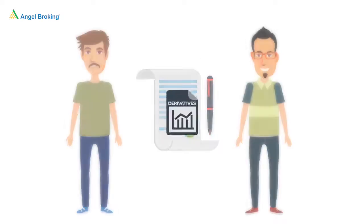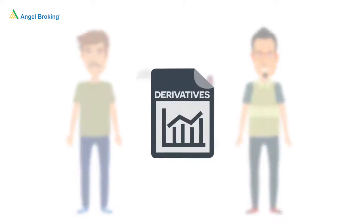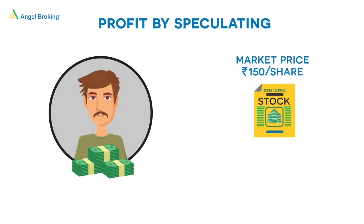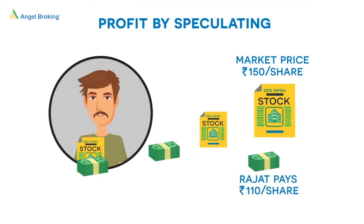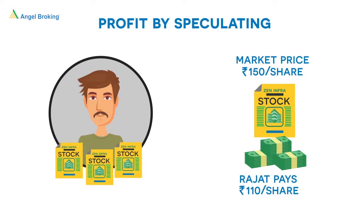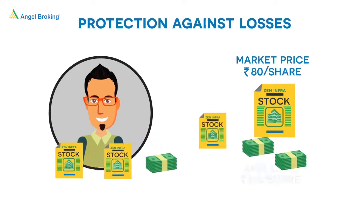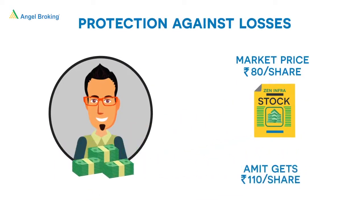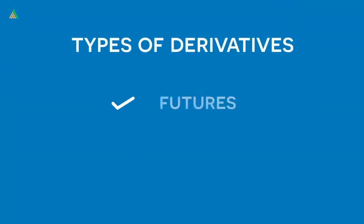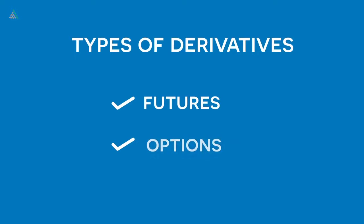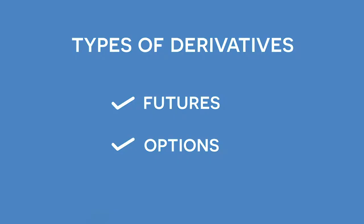The contract between Rajat and Ahmed is a derivative. It allows Rajat to make profit by speculating and provides Ahmed protection from incurring heavy losses. Futures and options are two common types of derivatives.